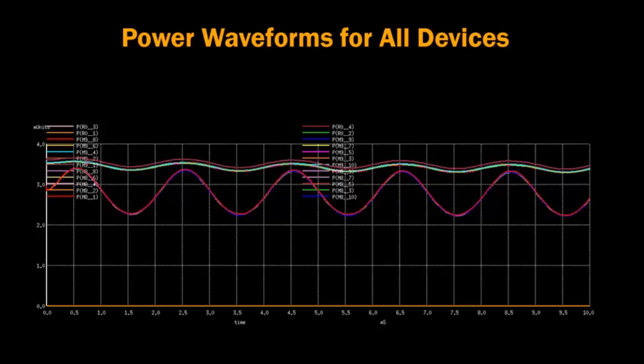Here we see some power waveforms for several devices on a chip. They consist of sinusoidal components on top of DC components.